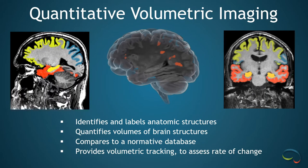Icometrics utilizes deep learning algorithms to develop their Icobrain product. This is what quantitative volumetric brain segmentation looks like with the Icobrain post-processing software. The software identifies, color codes, and labels anatomic structures. It then quantifies the volume of those structures and compares them to a large normative database to determine if the volume is statistically significant for patient age. It also provides volumetric tracking to assess for rate of change over time, which helps us determine the rate and degree of disease progression.